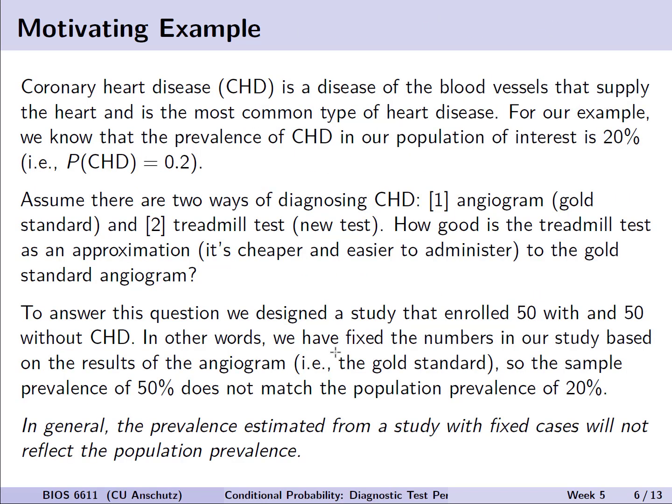For our motivating example that we'll use for the next two slide sets, let's consider the condition of coronary heart disease, or CHD. It's a disease of the blood vessels that supply the heart, and is one of the most common types of heart disease. For our example, we're going to assume that in our population of interest, the prevalence of CHD is 20%, or in other words, we can say the probability someone has CHD is equal to 0.2. Now, let's assume there are two ways we can currently diagnose coronary heart disease. One is via an angiogram, which is our gold standard, and the other is a new test. We wish to evaluate a treadmill test, so essentially someone will run on the treadmill and will use those results to predict if they have or don't have coronary heart disease.